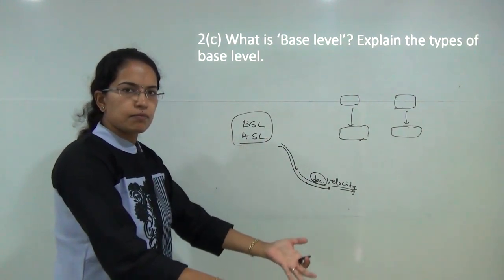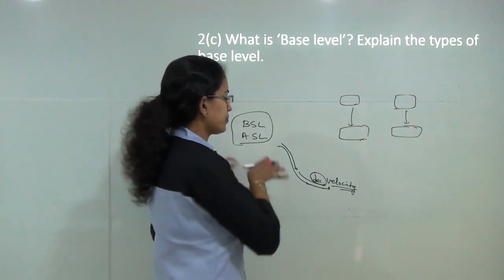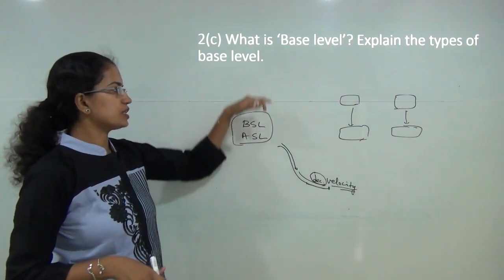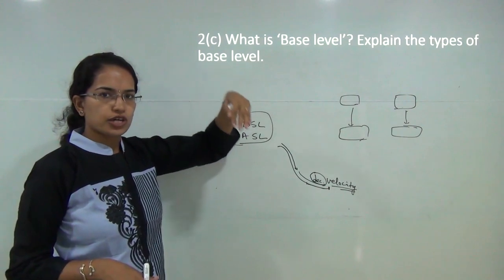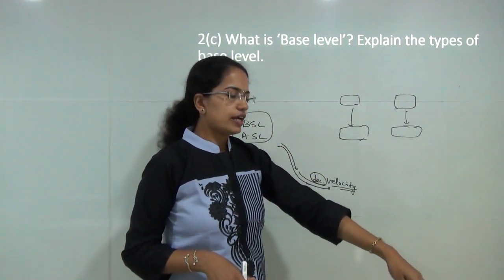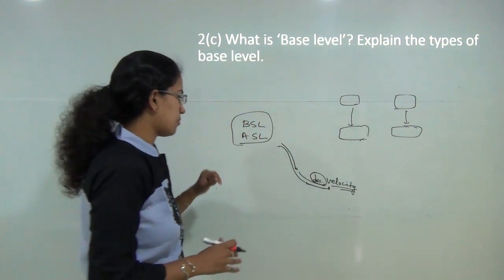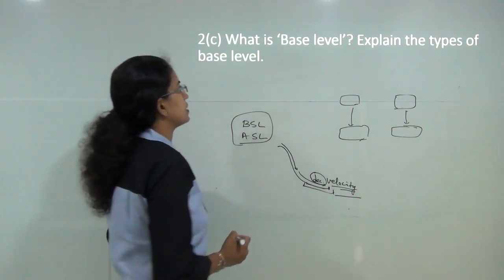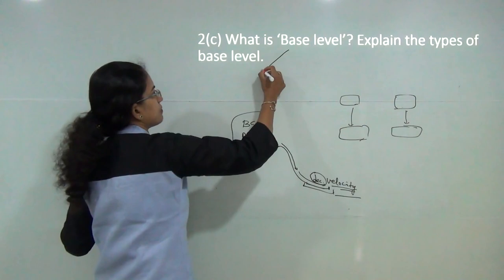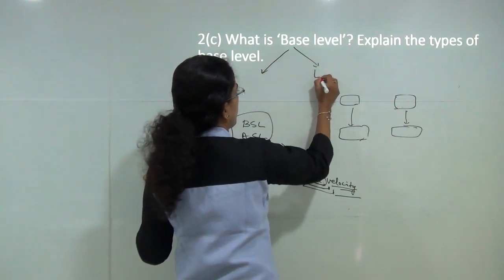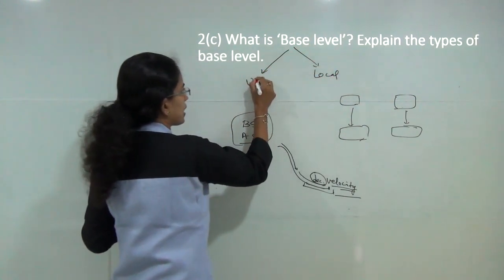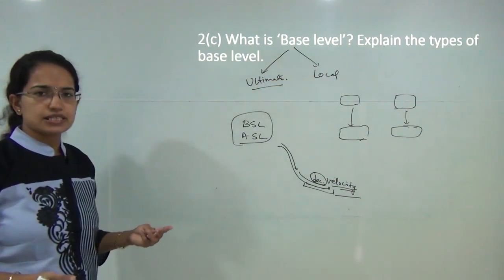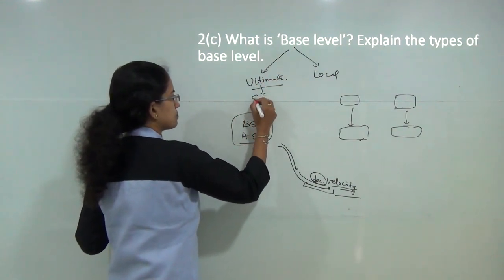Similarly, water flowing from a mountain gradually tapers and its velocity decreases as it nears the base level. Base level can be classified into two types: local base level and ultimate base level. The ultimate base level is with respect to the sea — ultimately all flowing water merges with the sea.